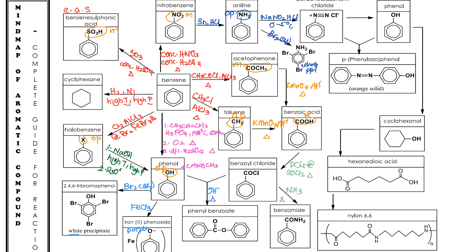If you add NaNO₂ in HCl at 0–5°C, you form benzene diazonium chloride. This compound is very stable. Please note the positive charge — it is located on the nitrogen with four covalent bonds. If you add water under reflux, you get phenol. Benzene diazonium chloride can also react with phenol under alkaline conditions at 0–5°C to form an azo dye. All of these must be done under cold conditions.